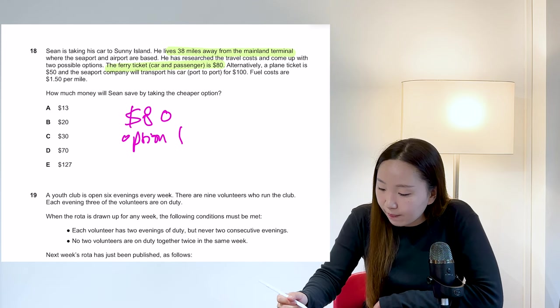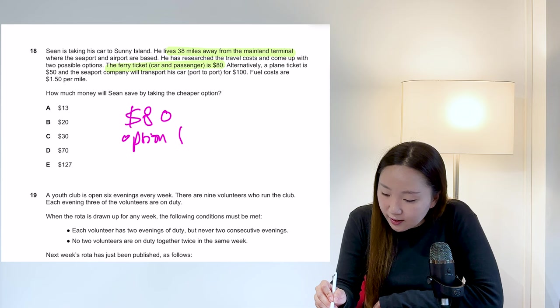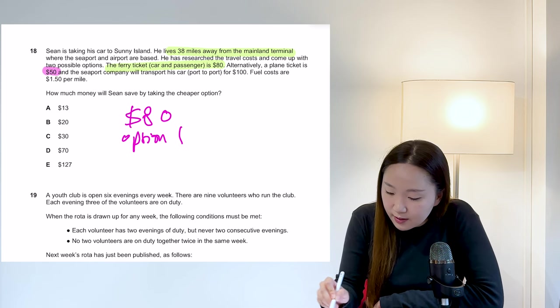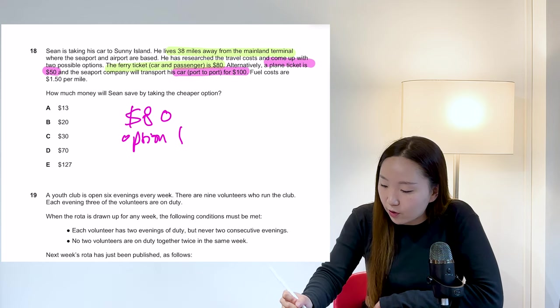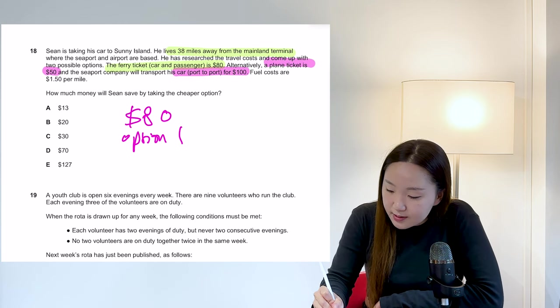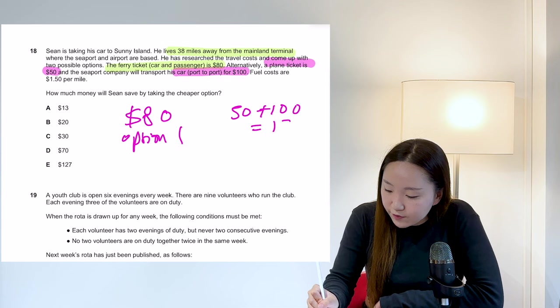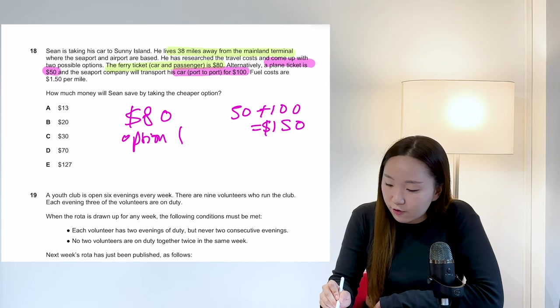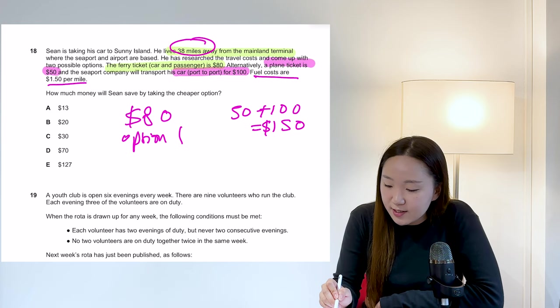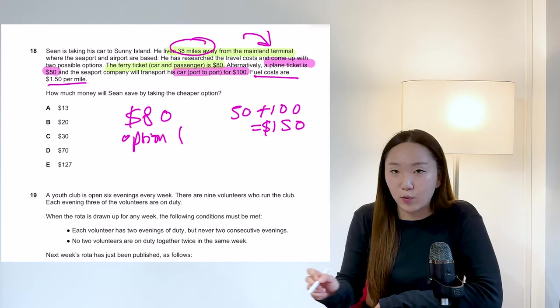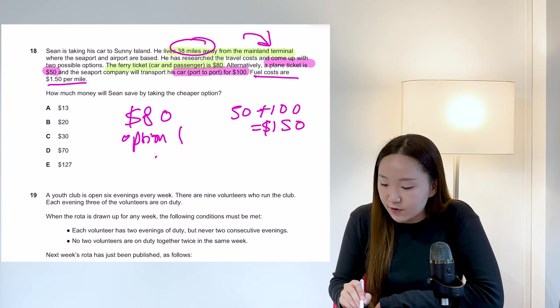Well, let's look at option two. We would be looking at a plane ticket is $50. And the seaport company will transport his car port to port for $100. So the other option is 50 plus 100 equals $150. Fuel costs are 150 a mile. That doesn't really matter because either way, he has to get himself to the terminal. So it's going to cost the same whichever option you choose. So it's literally just the difference between these two, which would be D.